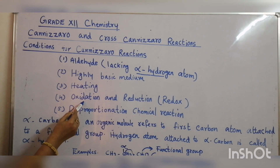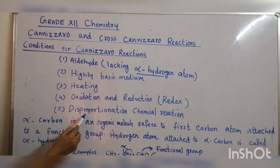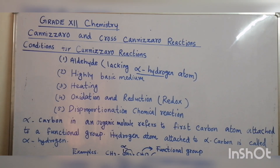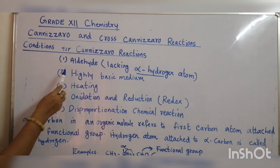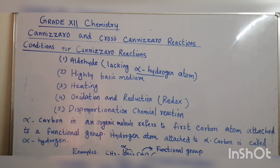The Cannizzaro Reaction is an oxidation and reduction reaction — a redox reaction — and it is a disproportionation chemical reaction. Now let us discuss the first point: aldehyde lacking alpha-hydrogen atoms.